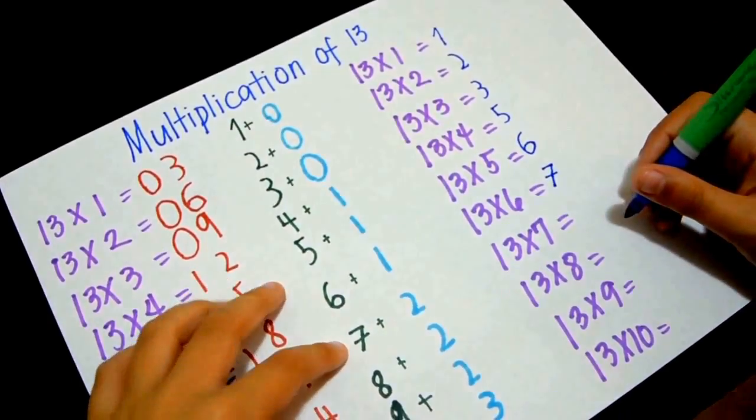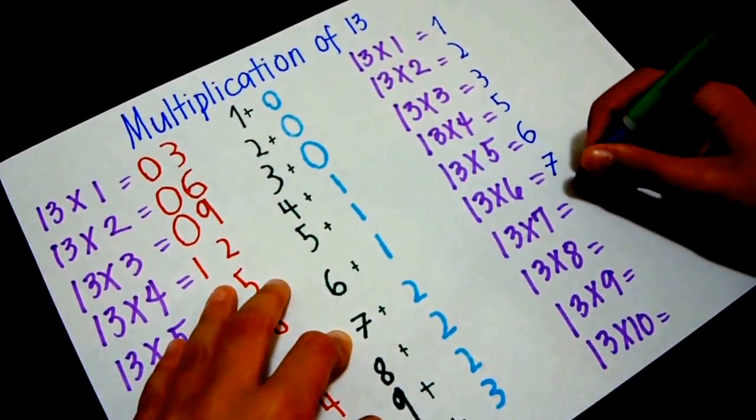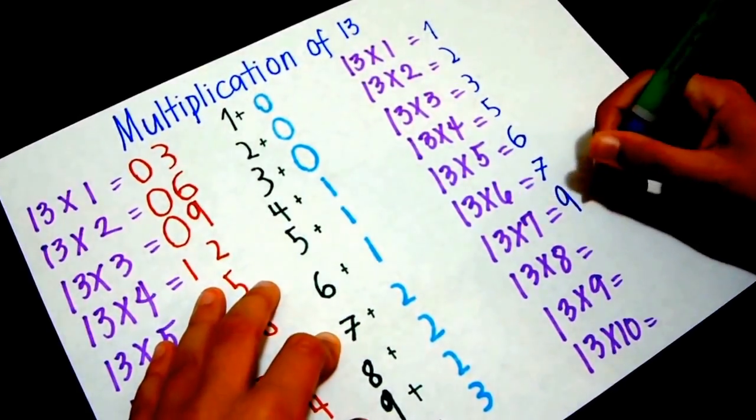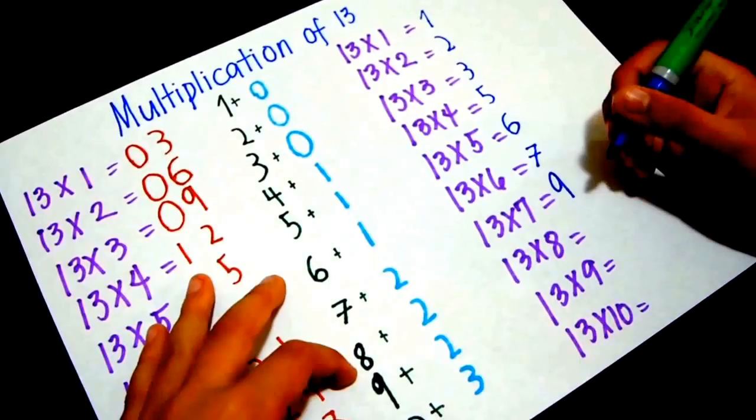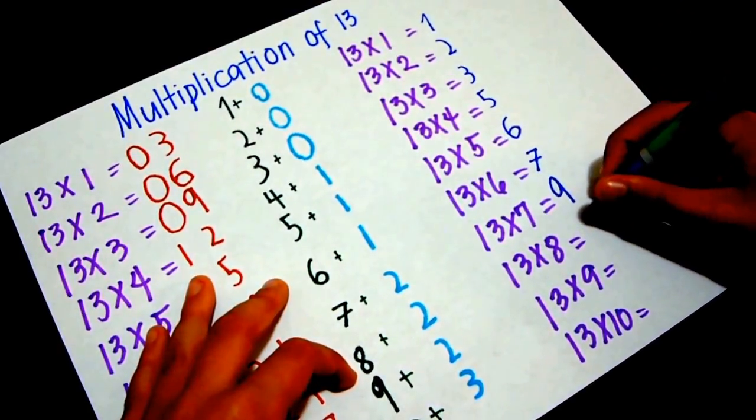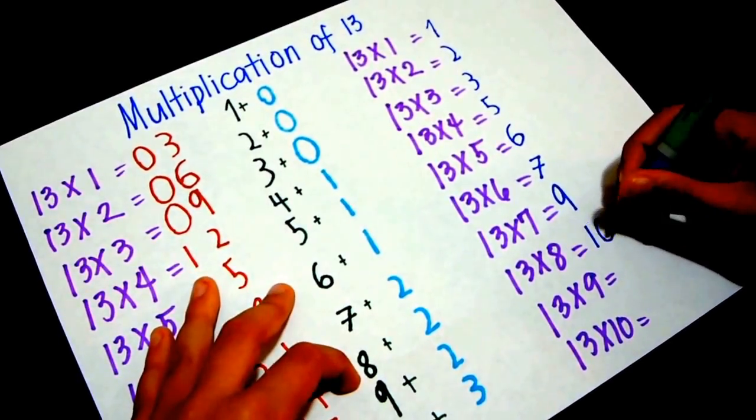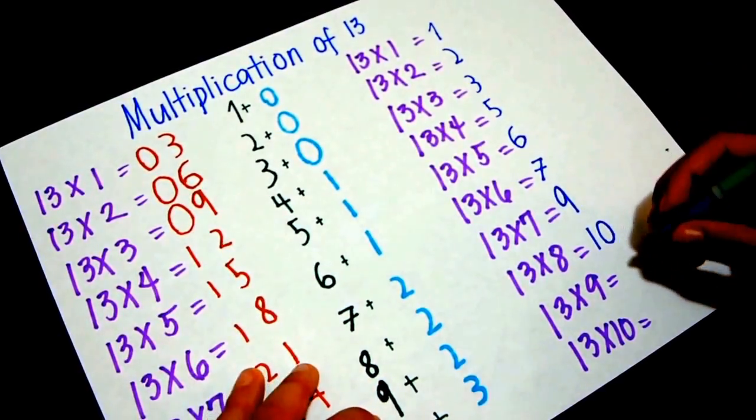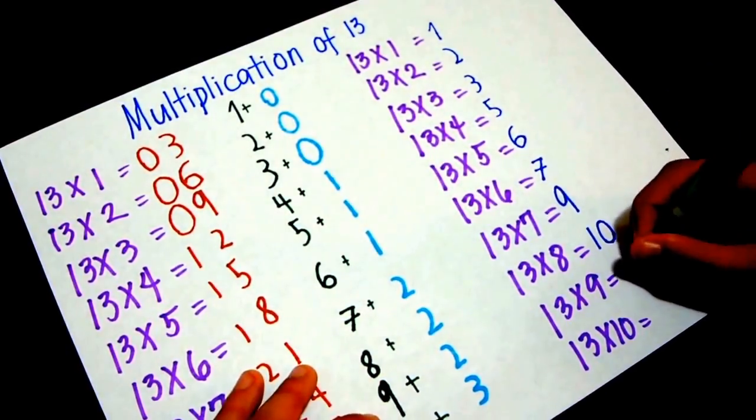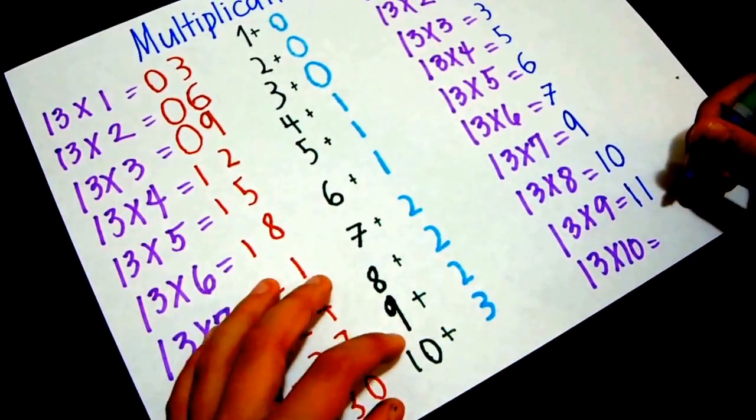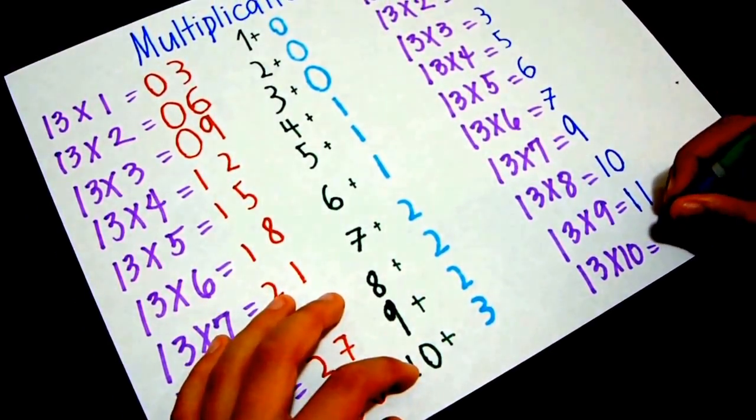6 plus 1 is 7, 7 plus 2 is 9, and 8 plus 2 is 10, 9 plus 2 is 11, and 10 plus 3 is 13.